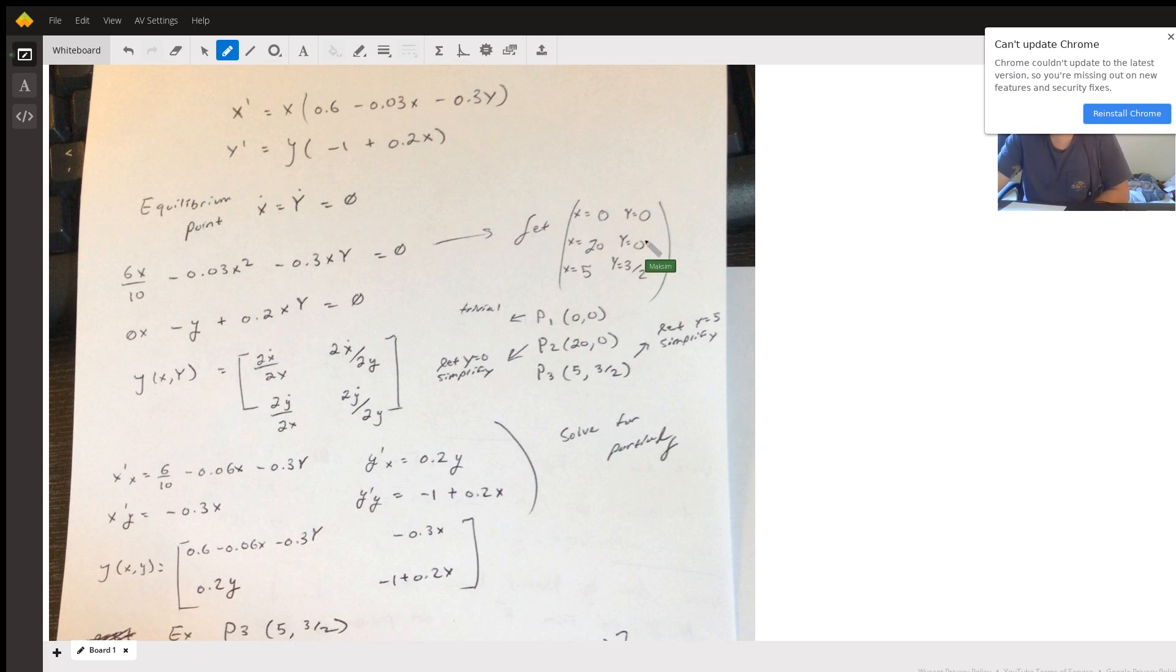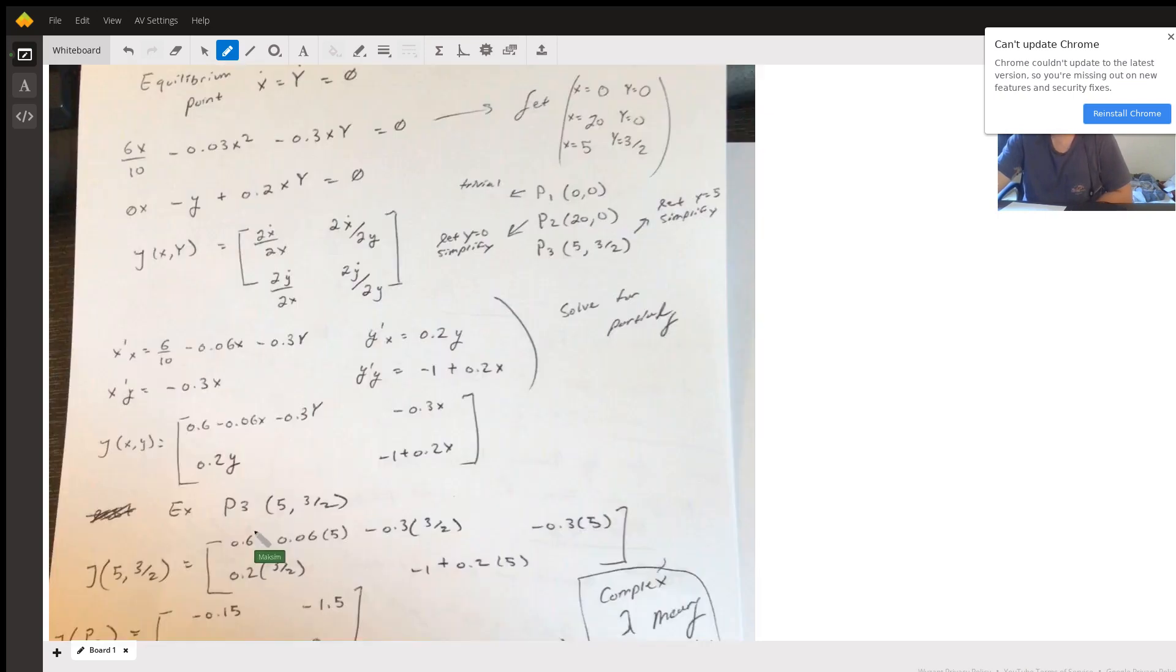There's always the trivial solution that's not too special, but the two points after that are when x is 20, y is zero, and x is 5, y is 3 over 2. This is done through inspection and through setting a variable to your desired value that you see it will reach zero, and then solving it down through there. Fairly easy.